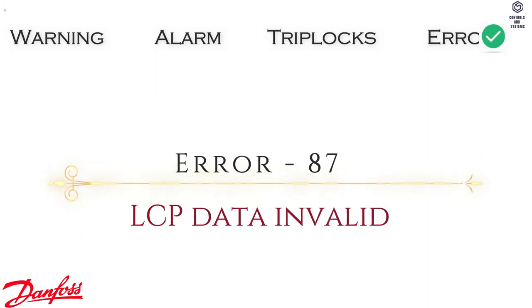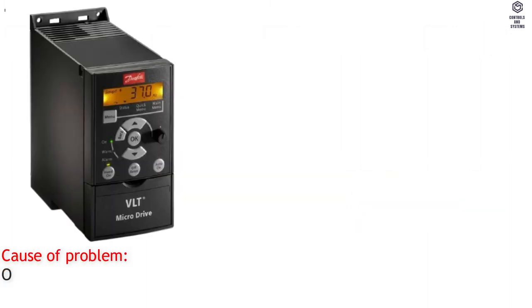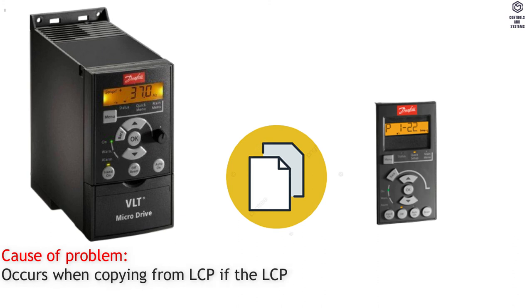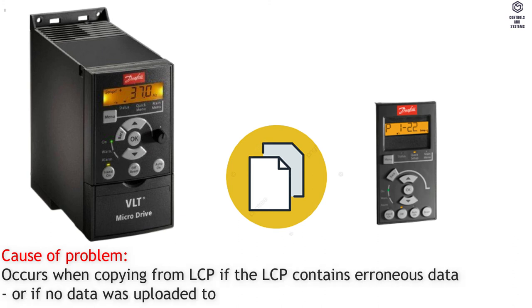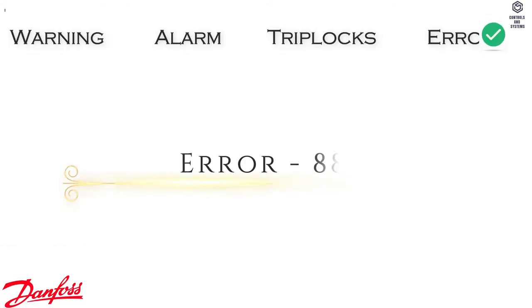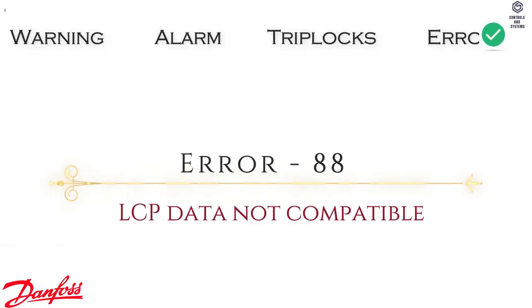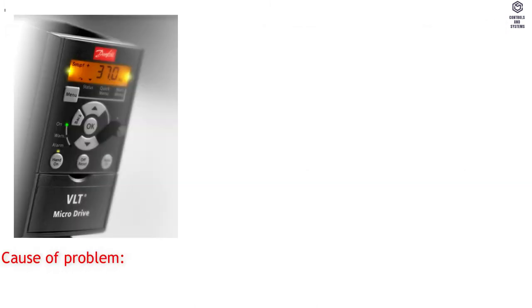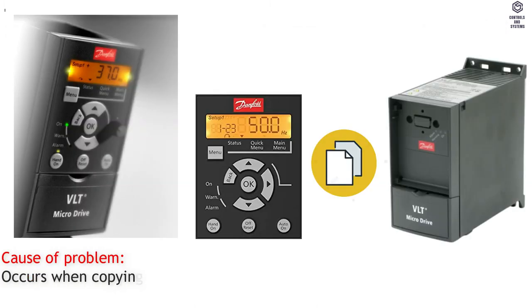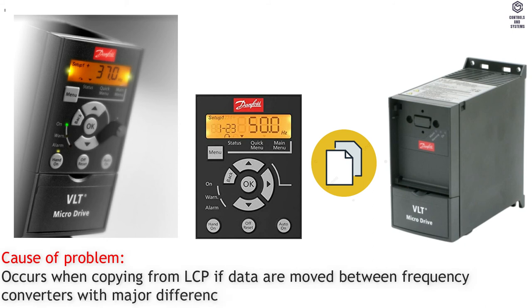Error 87: LCP Data Invalid. Cause of Problem — occurs when copying from LCP if the LCP contains erroneous data, or if no data was uploaded to the LCP. Error 88: LCP Data Not Compatible. Cause of Problem — occurs when copying from LCP if data are moved between frequency converters with major differences in software versions.